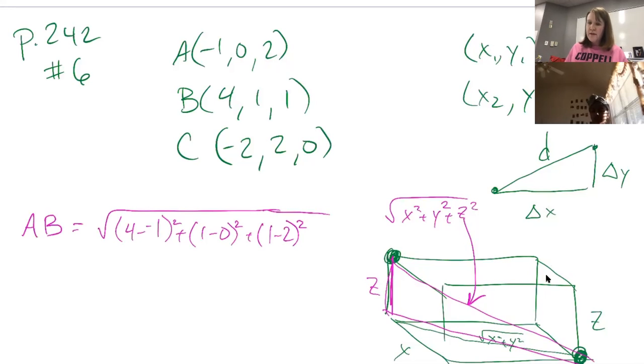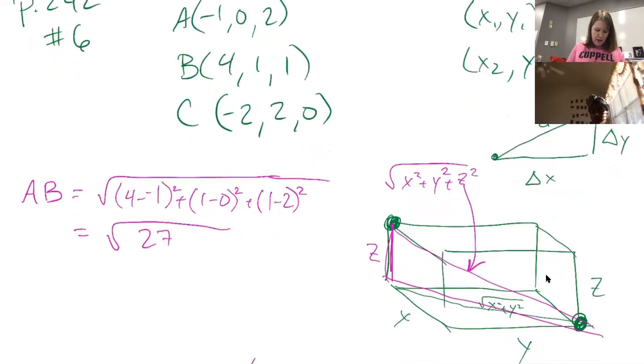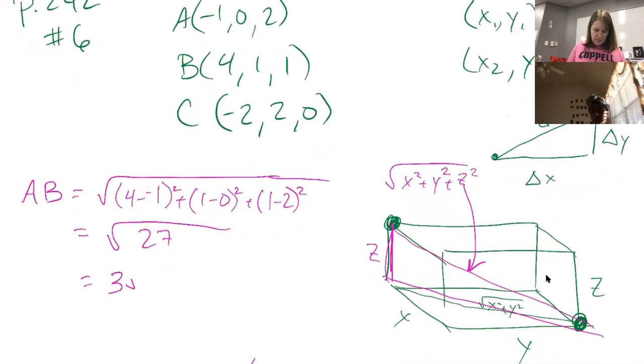Then you would do that for all the lines. What's this first one? That's five, so this is 25 plus 1 plus 1, so 27, which I'm going to just say is 3 root 3.